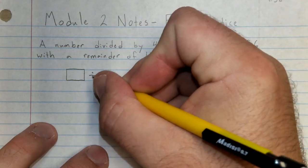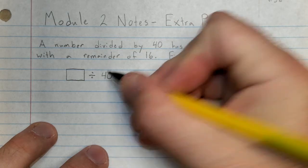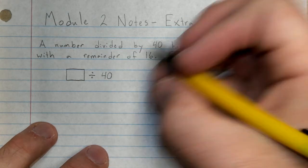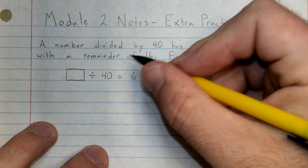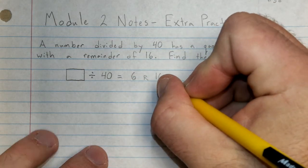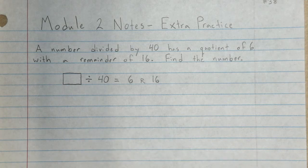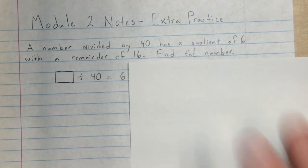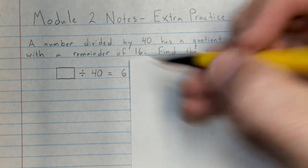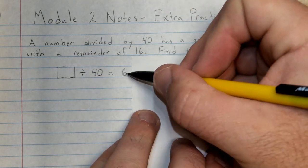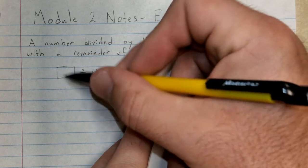A number divided by 40 has a quotient, so that means it equals - this divided by 40 equals 6 with a remainder of 16. What are we going to do with this? We're going to start by temporarily, just for a moment, ignoring the remainder. We're going to have to deal with that in a bit, but we can ignore it for a few minutes. Something divided by 40 equals 6.